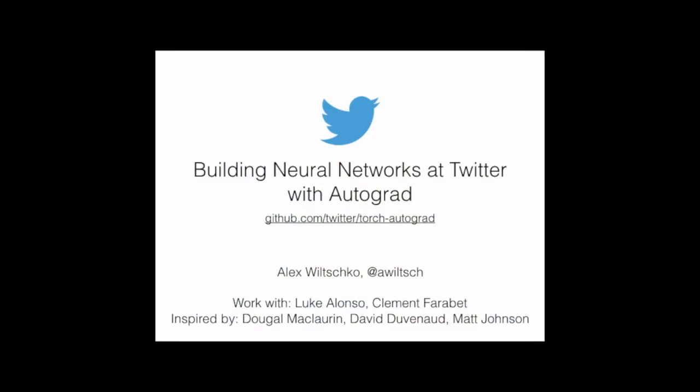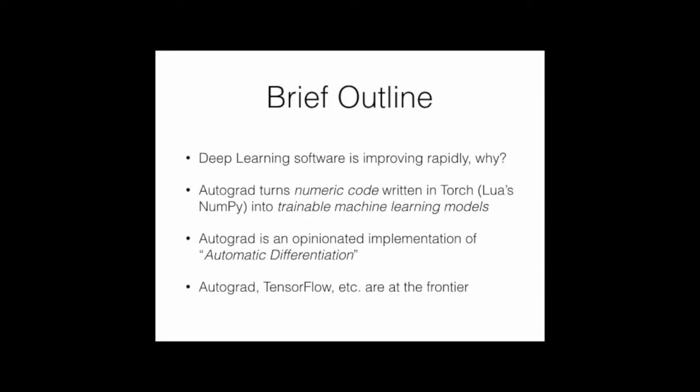My name's Alex. I'd like to tell you about neural networks at Twitter with Autograd. I'm going to talk about some context around the project as well. This is work joint with Luke Alonzo and Clement Farave at Twitter, inspired by the work done by Dougal McLaurin, David Duvenot, Matt Johnson, and Ryan Adams at Harvard's Machine Learning Group, which created the original version that we ported and industrialized. As a brief outline, deep learning software is rapidly improving. Why is that?